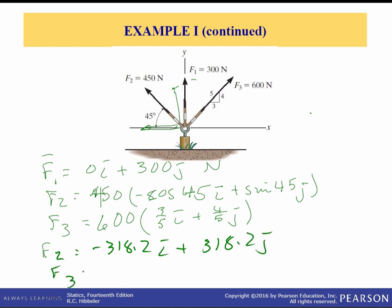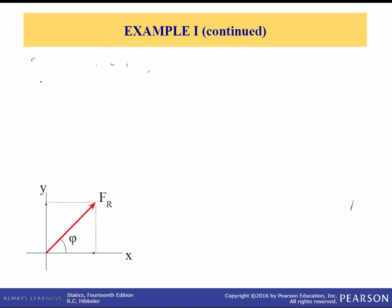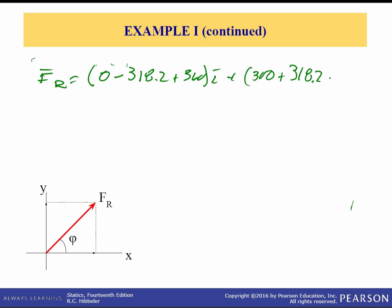Simplifying F2: 450 times negative cosine of 45 is minus 318.2i, and plus 318.2j. For F3: 600 times 3/5 is 360i, and 4/5 times 600 is 480j. Now collecting all i components: 0 minus 318.2 plus 360, and all j components: 300 plus 318.2 plus 480. The resultant vector fR equals 41.8i plus 1098j newtons.